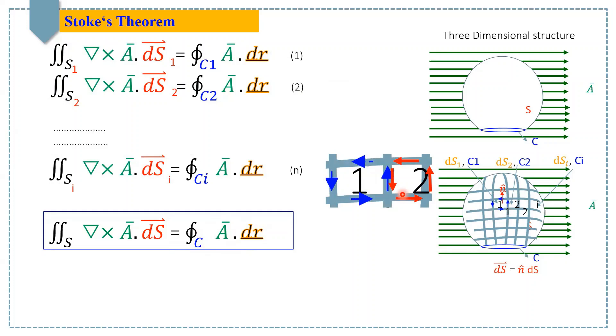Where you can see in element one, the integral loop is anti-clockwise, and similarly in the second segment two, the loop integral is also anti-clockwise. At the common side between two adjacent elements, the line integrals are in opposite directions and hence they cancel each other.